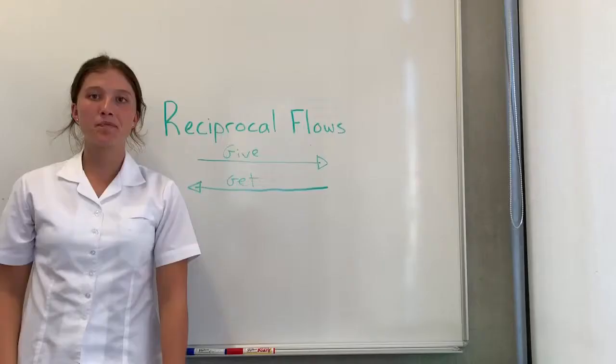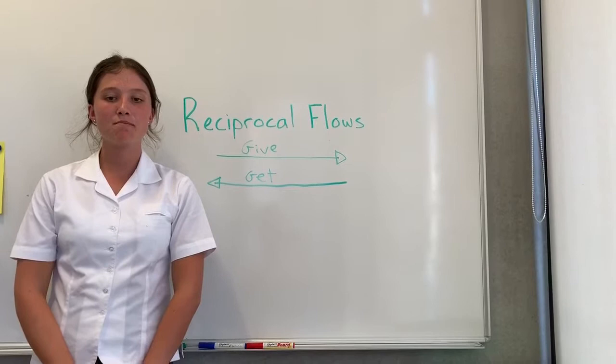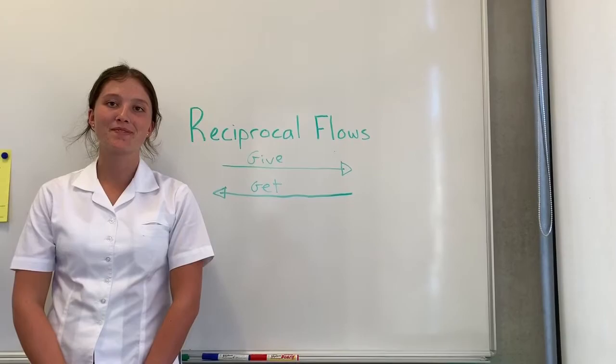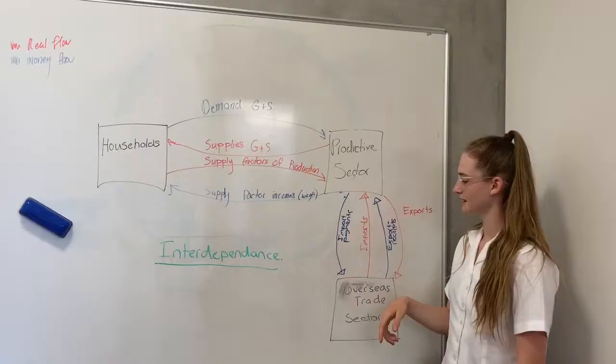Reciprocal flows are the dependence and money flows between sectors. This is when one sector — for example, firms — is dependent on households to provide them with labour, and in return the households earn wages. An example of interdependence is imports and import payments. Without New Zealand importing goods and services, import payments would not exist.